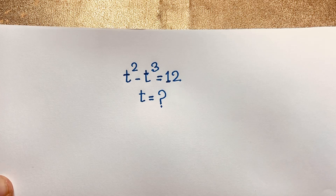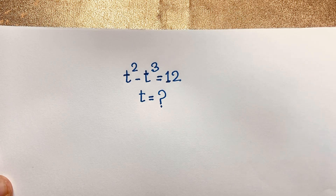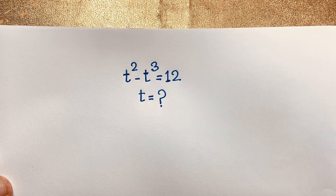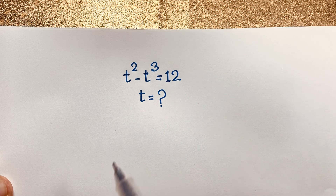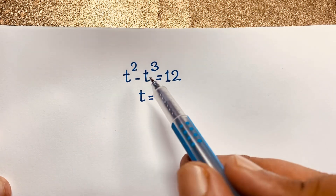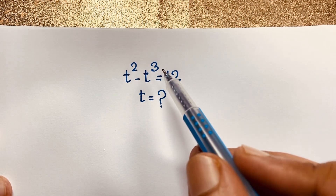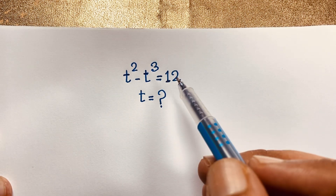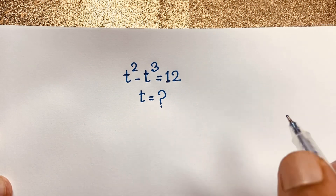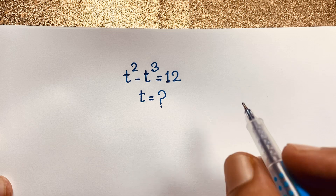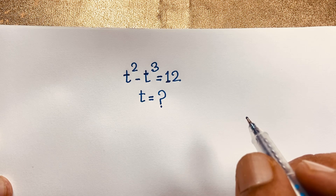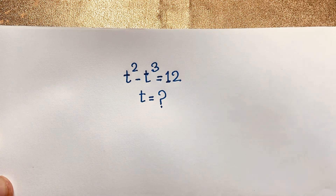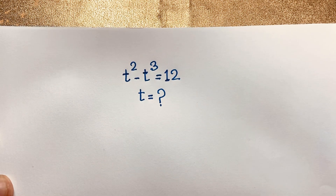Hello everyone, how to solve this interesting German math Olympiad question, which is t to the power 2 minus t to the power 3 is equal to 12. t is equal to what? How to solve this interesting math Olympiad question.